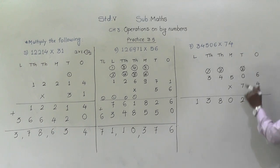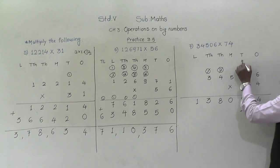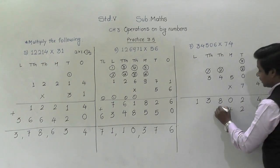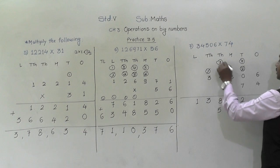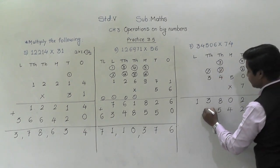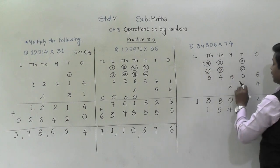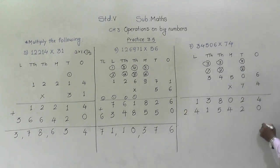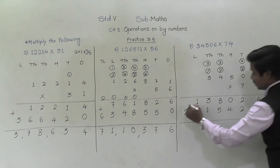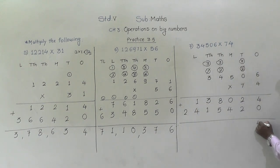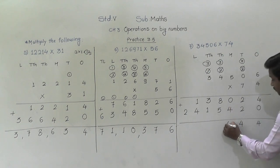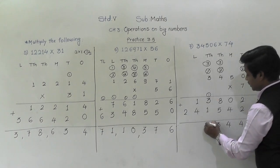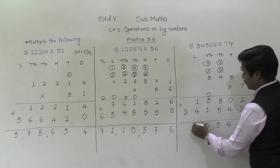Now we multiply by the tens place digit. Write 0 at ones place and cut the carry over. Seven sixes are 42 — 2 will come down, 4 will be carried. Seven zeros are 0 plus 4 is 4. Seven fives are 35 — 5 will come down, 3 will be carried. Seven fours are 28 plus 3 is 31 — 1 will come down, 3 will be carried. Seven threes are 21 plus 3 is 24. Let's add: 4 plus 0 is 4, 2 plus 2 is 4, 0 plus 4 is 4, 8 plus 5 is 13 — 3 down, 1 carried. 3 plus 1 plus 4 is 5. 1 plus 4 is 5. And here 2.